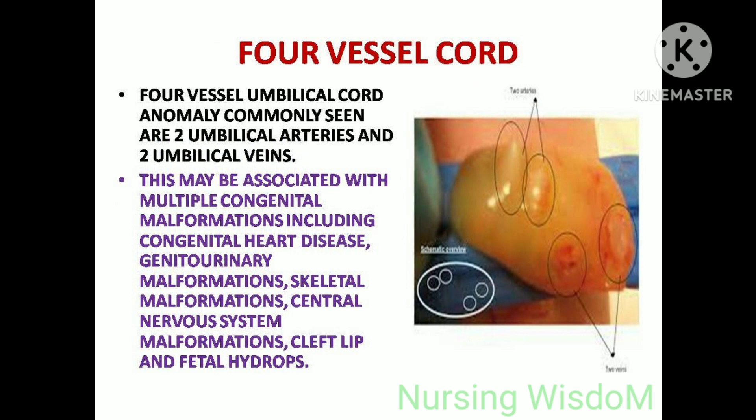Four vessel cord: the four vessel umbilical cord anomaly commonly seen involves two umbilical arteries and two umbilical veins. This may be associated with multiple congenital malformations including congenital heart disease, genitourinary malformations, skeletal malformations, central nervous system malformations, cleft lip, and fetal hydrops.